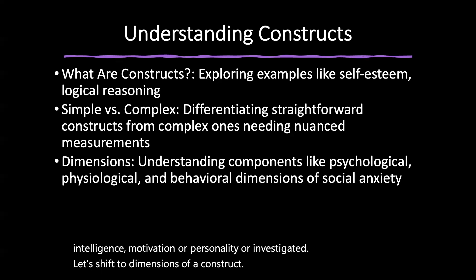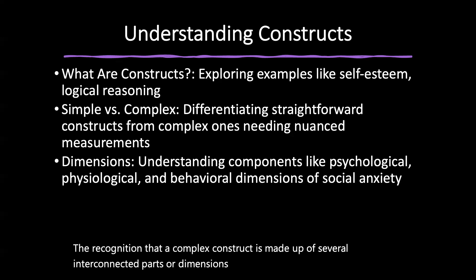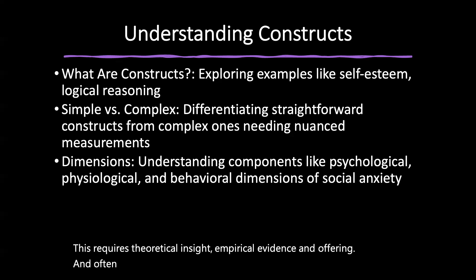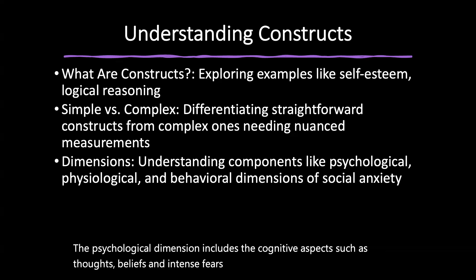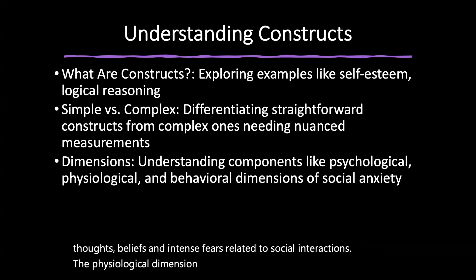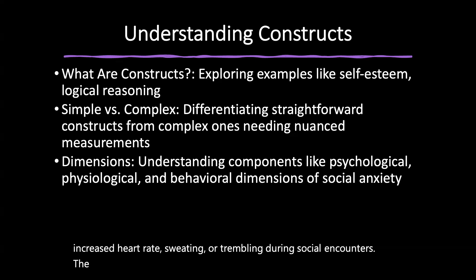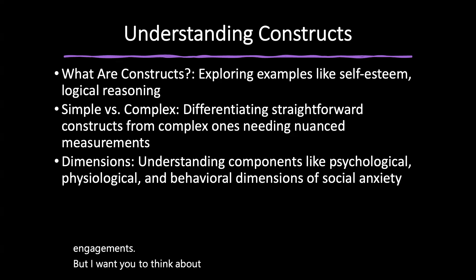The recognition that a complex construct is made up of several interconnected dimensions adds depth to understanding. This requires theoretical insight, empirical evidence, and iterative refinement. For example, social anxiety has a psychological dimension covering cognitive aspects such as thoughts, beliefs, and intense fears related to social interactions; a physiological dimension encompassing physical reactions such as increased heart rate, sweating, or trembling; and a behavioral dimension focusing on observable actions such as avoidance of social situations, lack of eye contact, or withdrawal from social engagements.